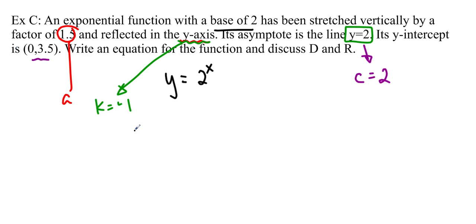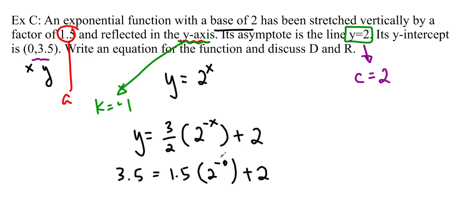So let's plug it in. And so we'll try y equals 3 over 2, because that's 1.5, times 2 to the negative x plus 2. And we're just going to substitute this x and this y. So we want to check 3.5 equals, is it 1.5 times 2 to the negative 0 plus 2? And 2 to the 0, of course, is 1. So actually, yeah, that is 3.5 and we're good to go.